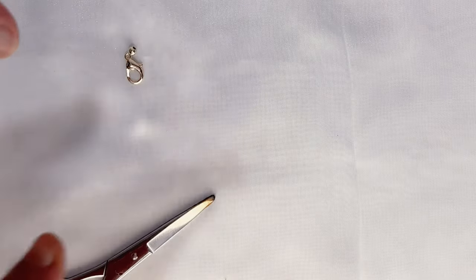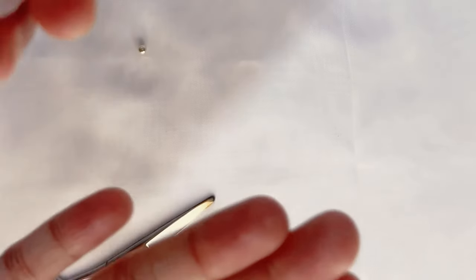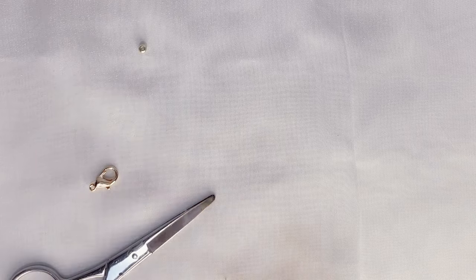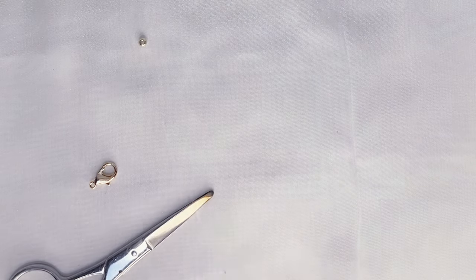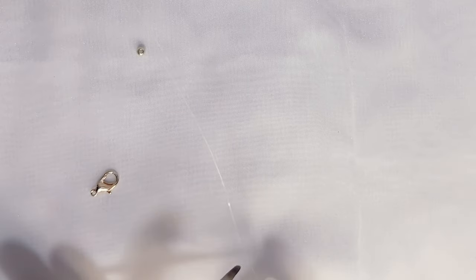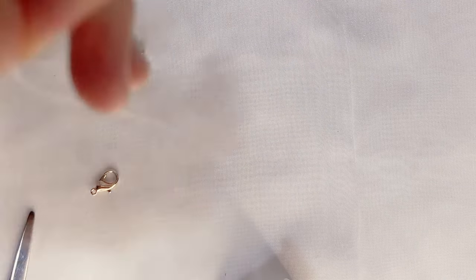There are two ways to attach lobster clasps to elastic thread. First way is take required length of thread for your necklace. I recommend to take more because you will make so many knots and you can have shortage of thread. So take longer thread.